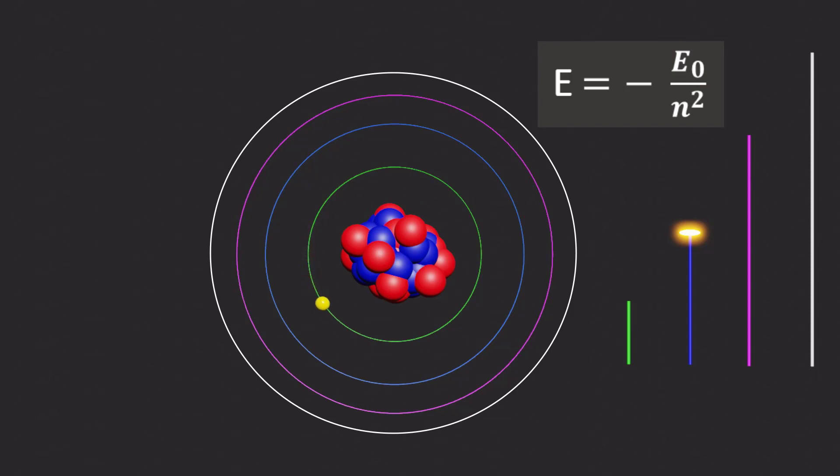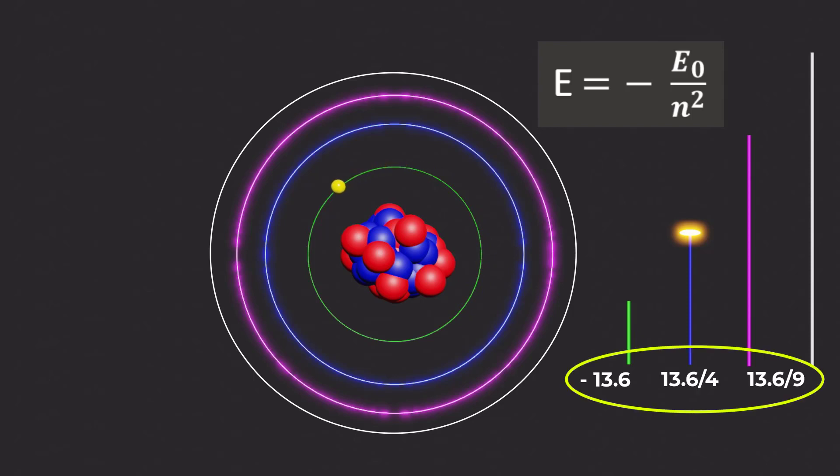This relationship shows that the energy of an electron in the first orbit is -13.6 electron volts, and in the second and third orbits it is one fourth and one ninth the energy of the electron in the first orbit.